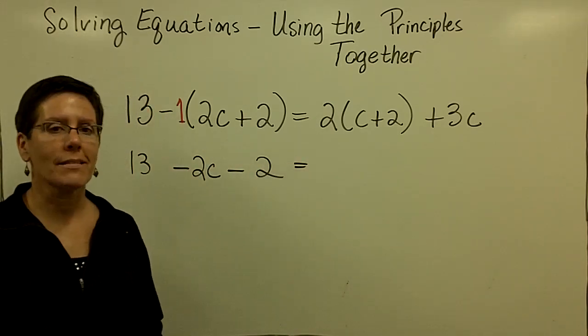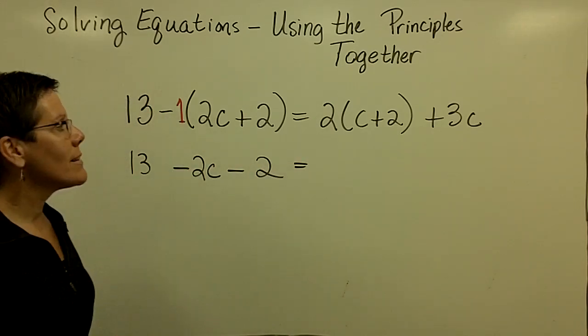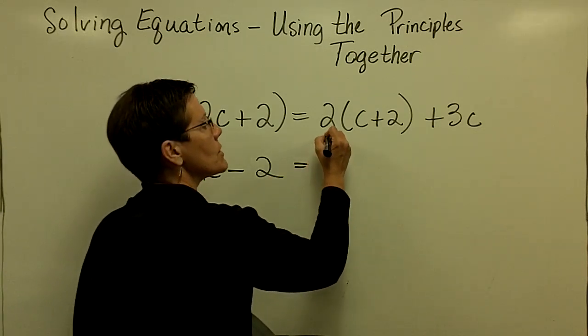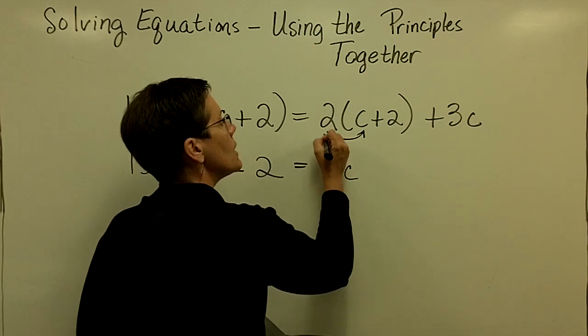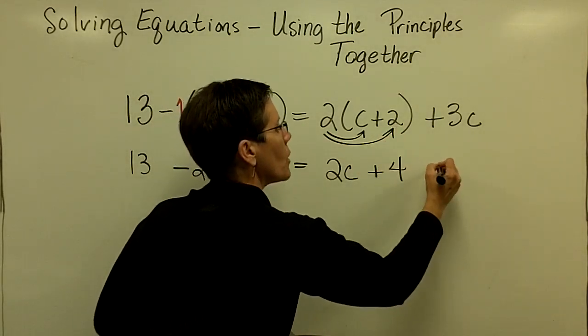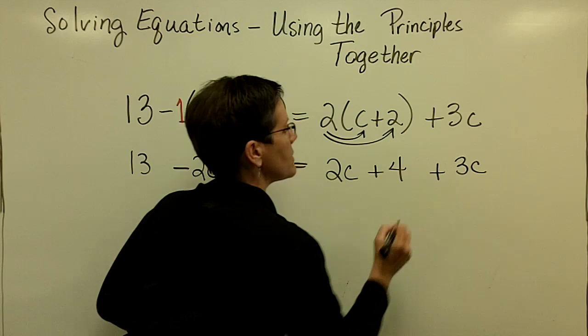We've gotten rid of the parentheses on the left hand side. On the right hand side, let's distribute. This one's easy. Positive 2 times c is a positive 2c, and 2 times 2 is a positive 4. And bring down your 3c.